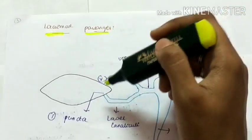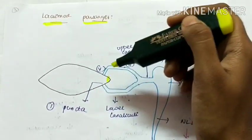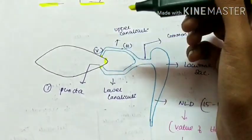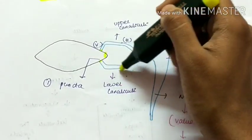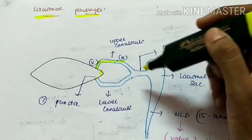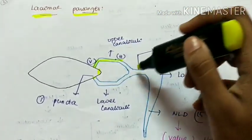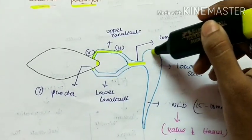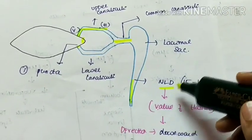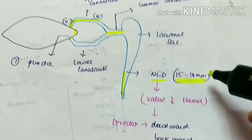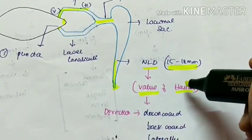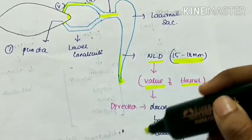The lacrimal passage includes the superior and inferior puncta at the medial canthus. From the puncta come the canaliculi — upper and lower — each made up of a vertical part and a horizontal part. The upper and lower canaliculi join to form the common canaliculus, which enters the lacrimal sac. The lacrimal sac continues as the nasolacrimal duct, which is around 15 to 18 mm in size and is guarded by the valve of Hasner at its opening.